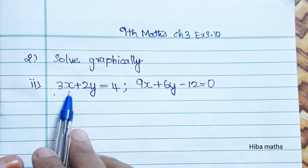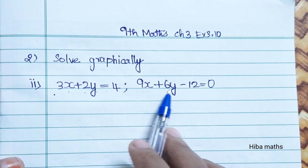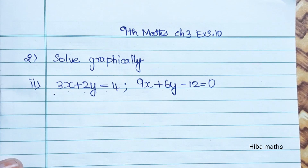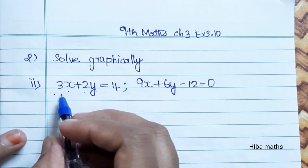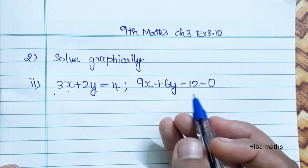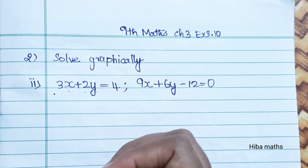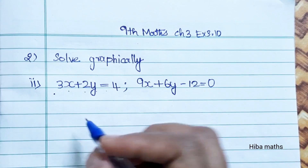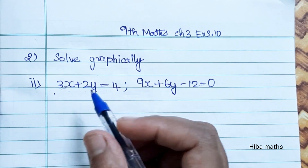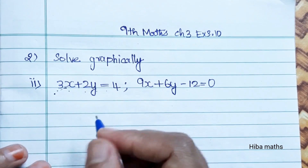The two equations are: 3x plus 2y equal to 4, and 9x plus 6y minus 12 is equal to 0. The two are directly related. We have to use the y value — substitute the x value and then find the y value. We can use the numbers to solve the x value, then solve the numbers.